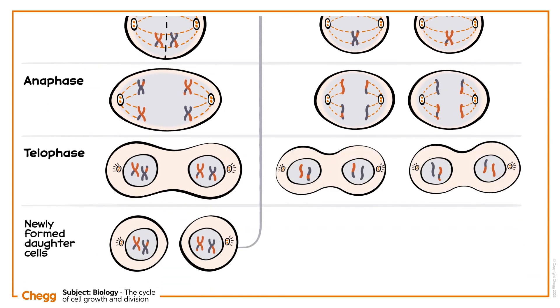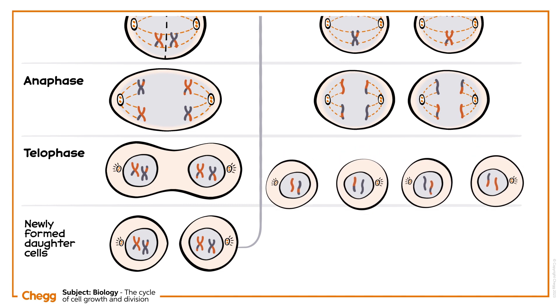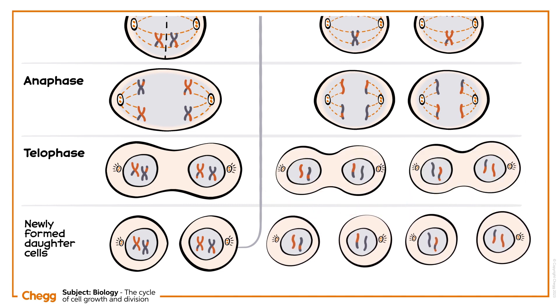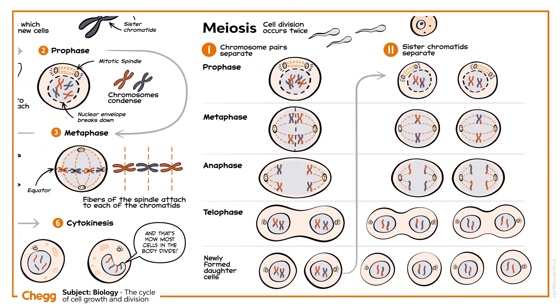And finally, in telophase II, the nuclear membrane reforms. Spindle tubules break down and the chromosomes decondense. The cell undergoes cytokinesis, leaving behind four non-identical haploid daughter cells.